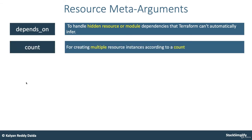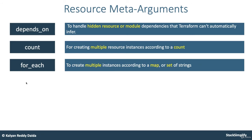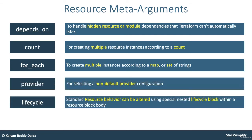The count meta argument is used for creating multiple resource instances according to a count. Similarly, for_each is used to create multiple instances according to a map or a set of strings. We also have the provider meta argument — for selecting a non-default provider configuration, we can use the provider meta argument in the respective resource.